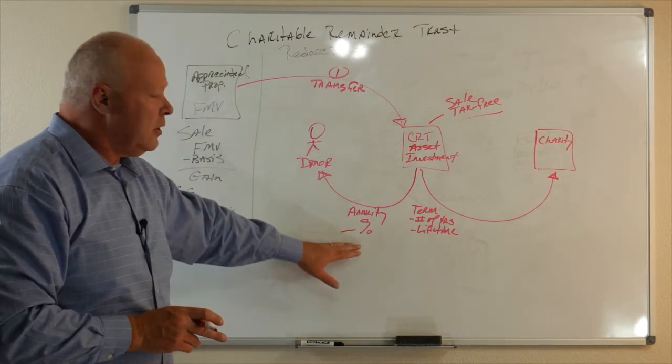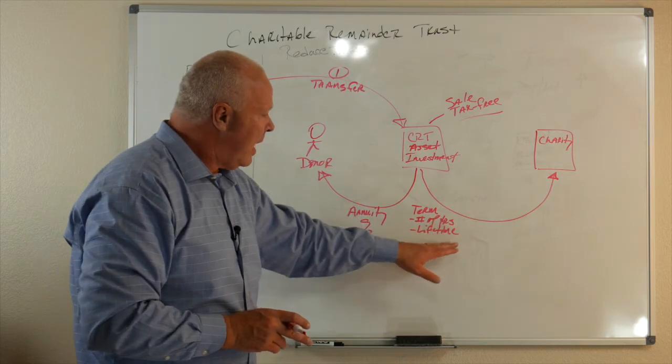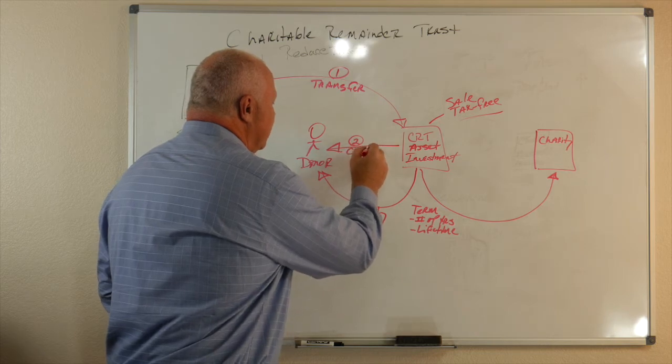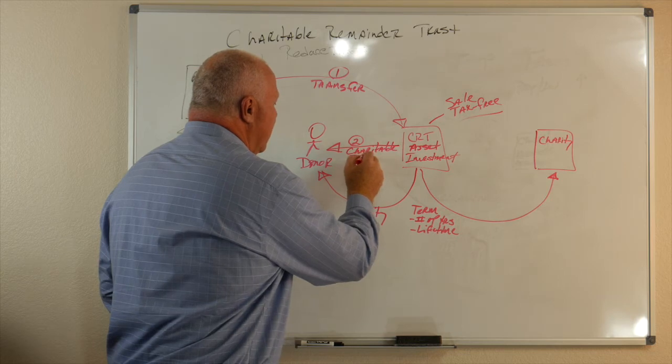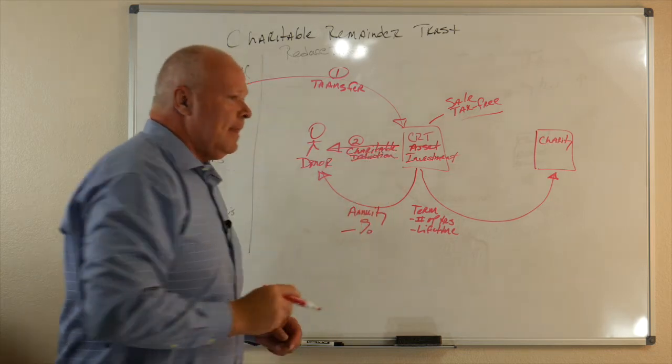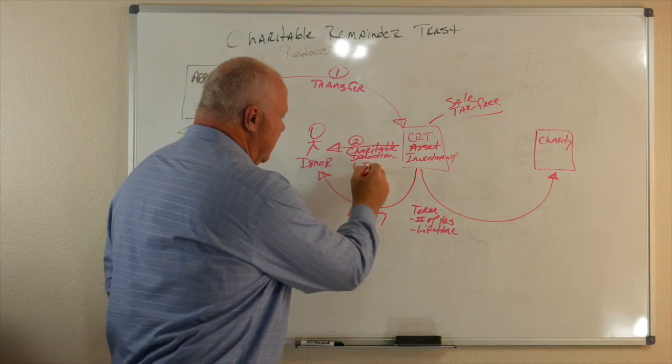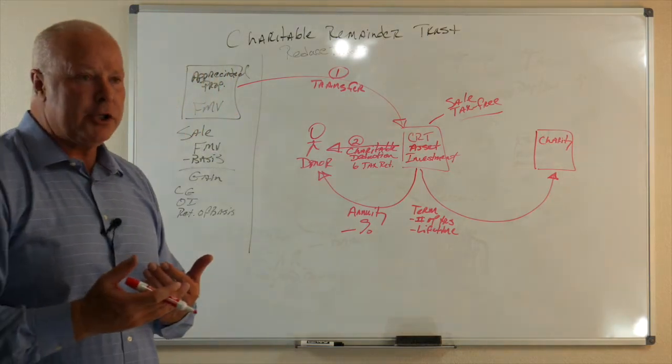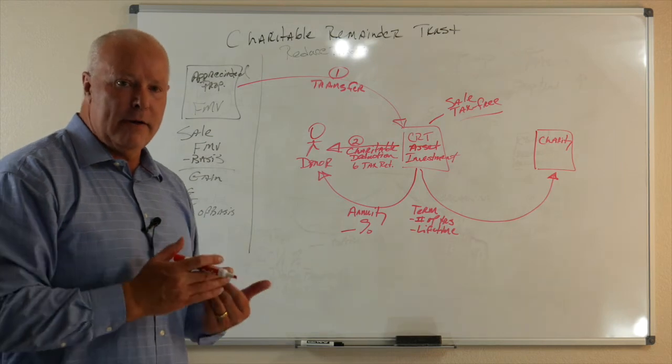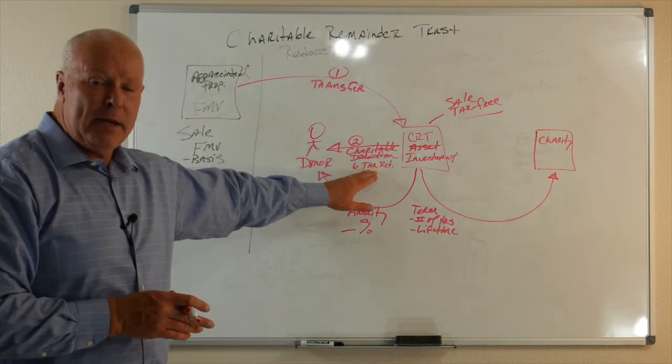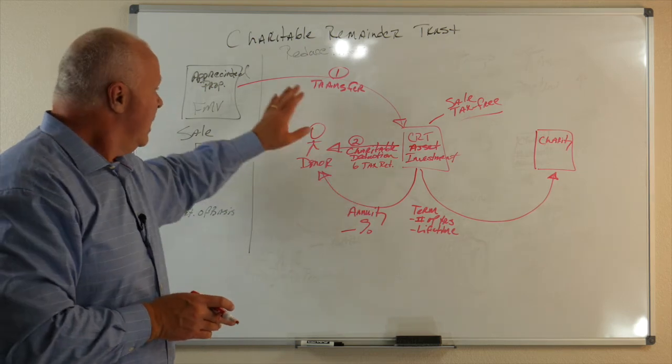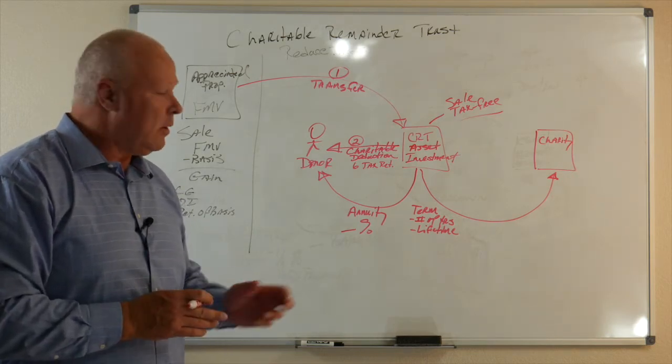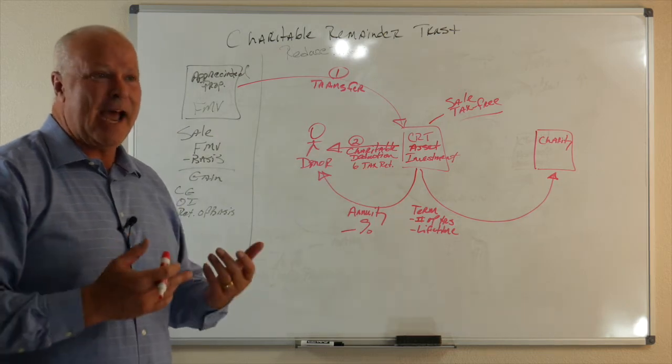Once we do that, once we've transferred it in, we know what our annuity payment is back to our client, we know how long this is, that's going to generate a charitable deduction. So, now our client can go back on their tax return, and they've got six tax returns to use up that charitable deduction. There's limitations on how much charitable deduction we can write off on our individual tax returns. That's going to be a limitation based off of adjusted gross income. If it's appreciated property that comes in here, 30% is the maximum adjusted gross income that we can write off with a charitable deduction. If it's cash, we can go up to 60%.